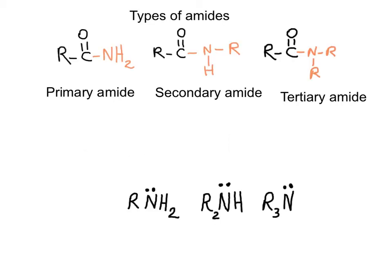There are three different types of amines. The difference between amines and amides is that the nitrogen is attached to a carbonyl — a carbon-oxygen double bond.